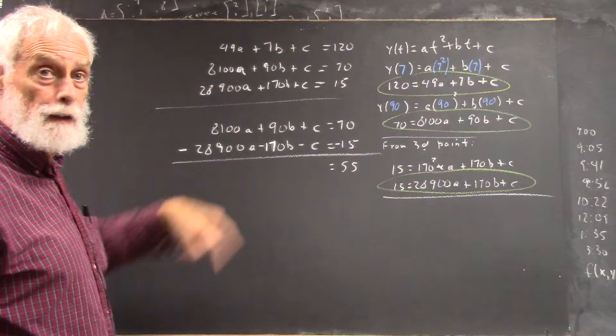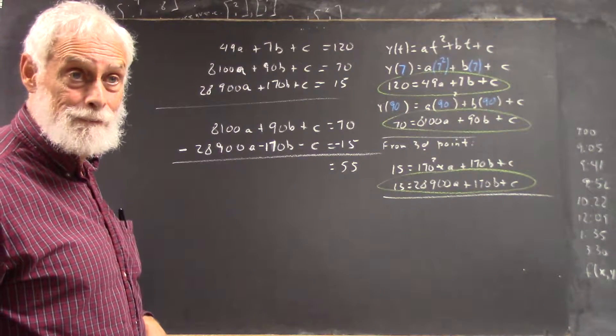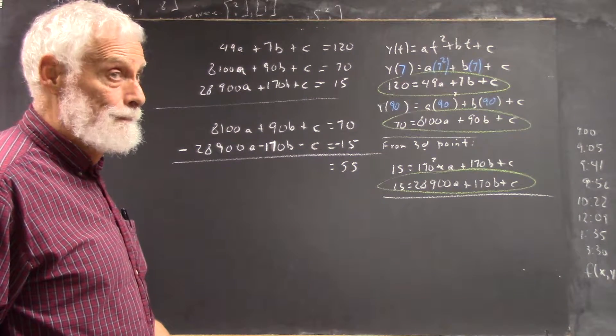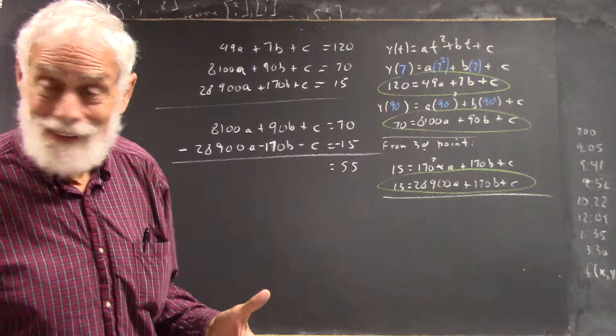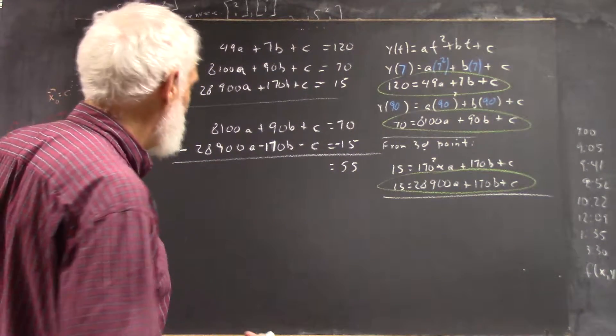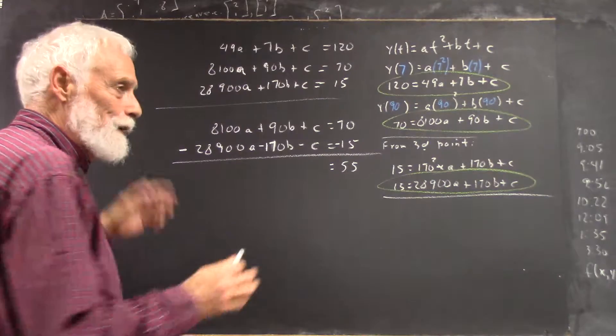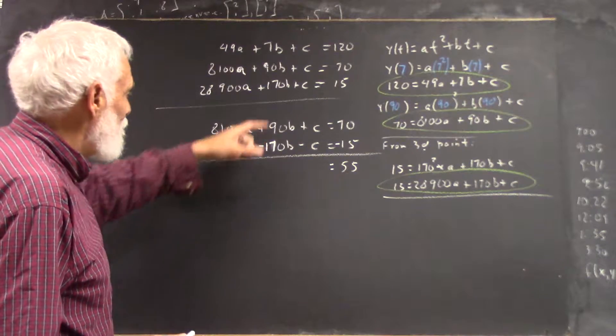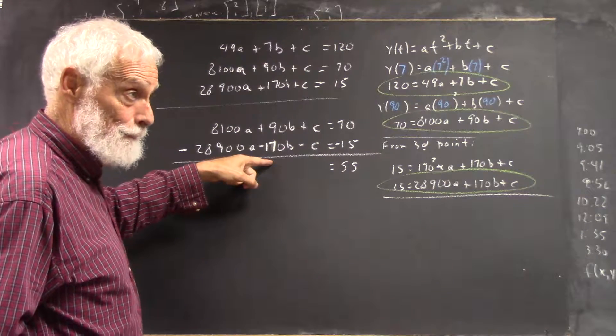What's C added to negative C? There's noise in the hall, a little louder? Zero. Zero, good, good. Say that with confidence, you're right. Okay? What's 90B added to negative 170B? Negative 80B.